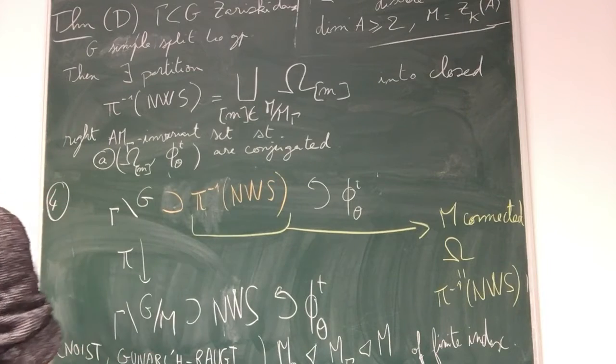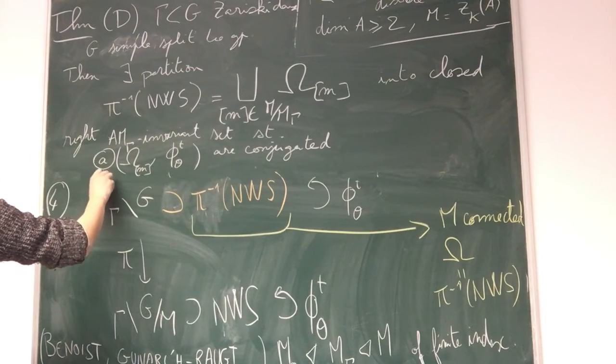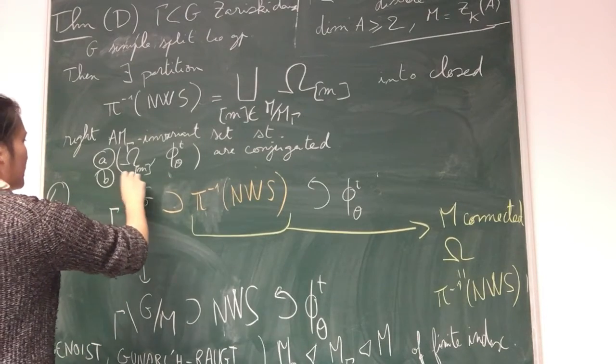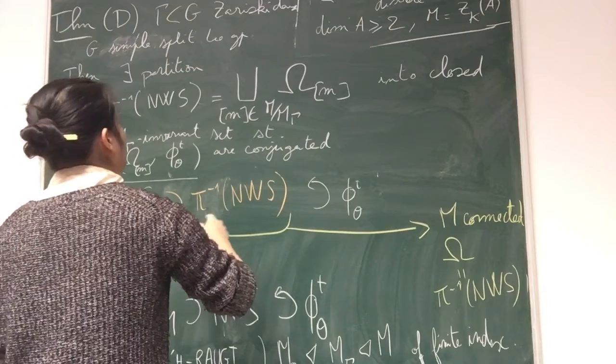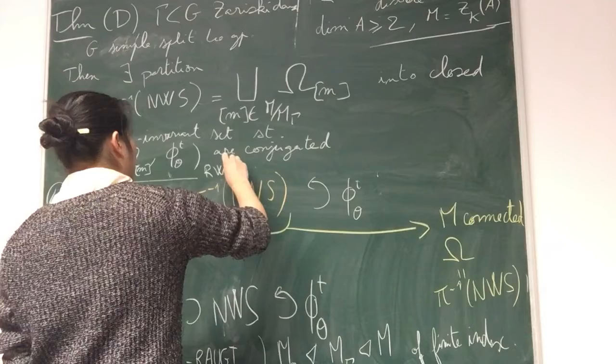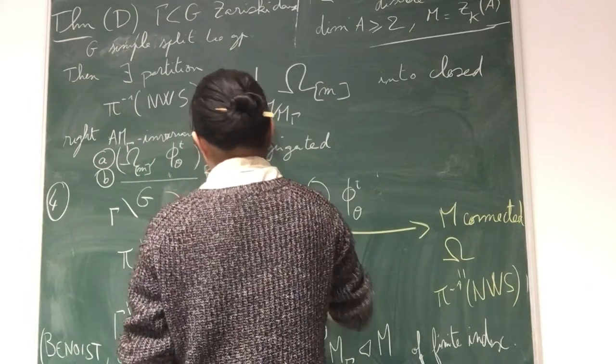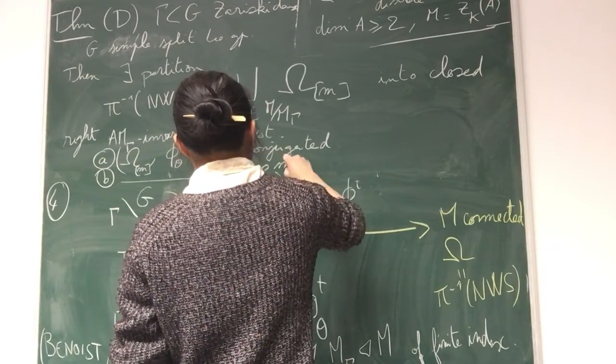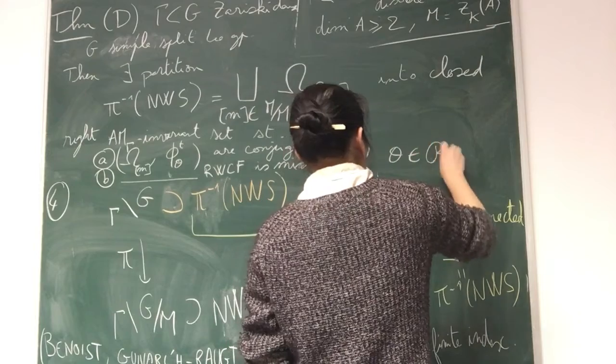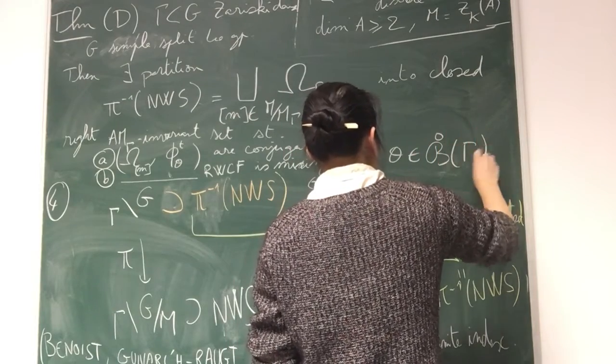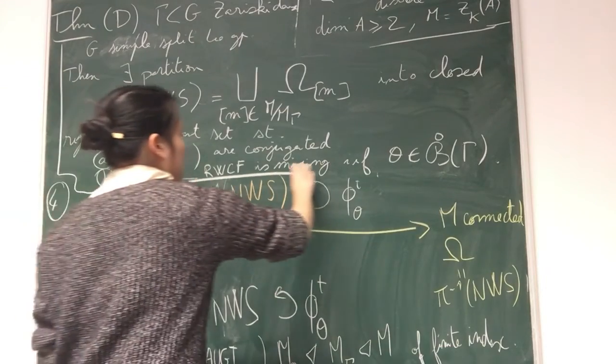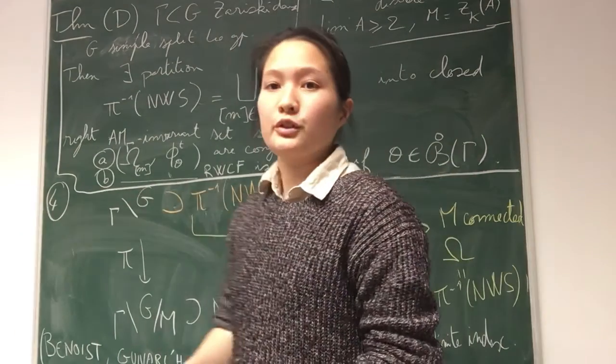The first thing is that the dynamics are more complicated. The second thing is that the regular Weyl chamber flow is mixing if and only if the vector is in the interior of the Benoist cone. And thank you for your attention.